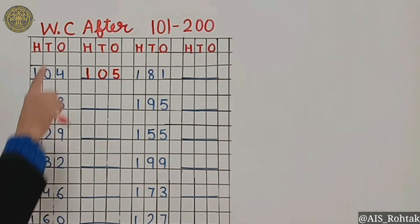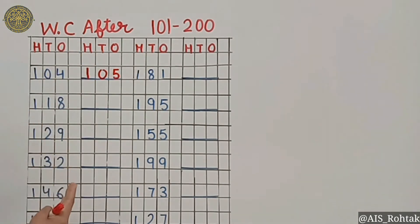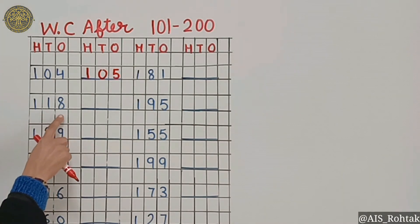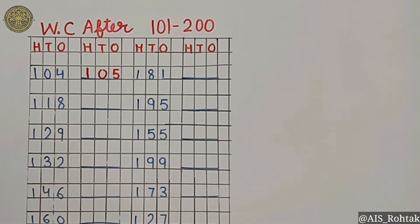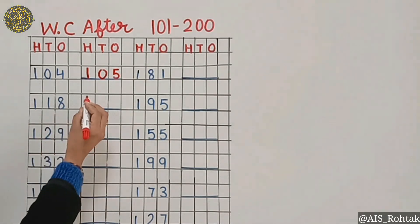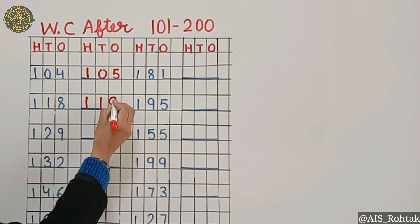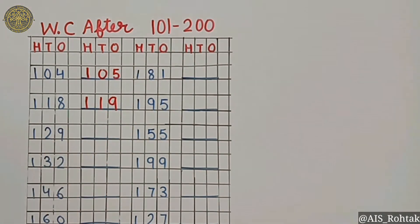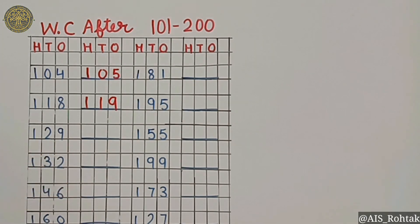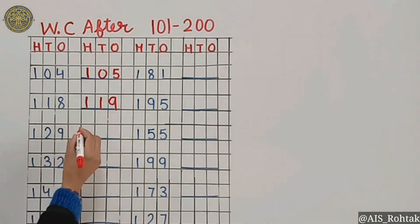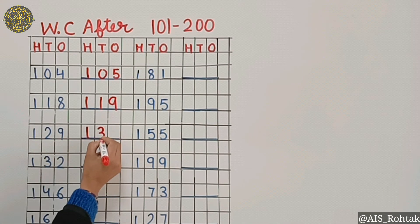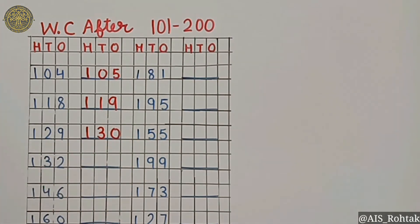After this, you have to write the next number of the number line. 118 — so which number will be the next? 129 — yes, the after number is 130.